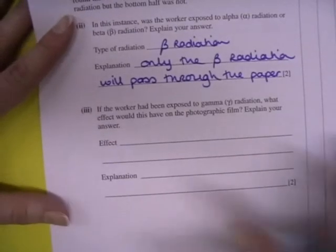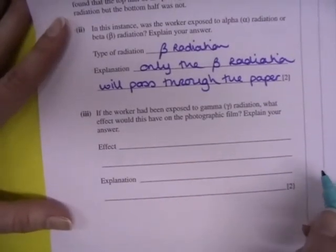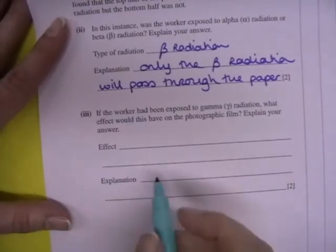Part 3. If the worker had been exposed to gamma radiation, what effect would this have on the photographic film? And explain your answer. So we are going to get one mark for the effect and one for the explanation again.